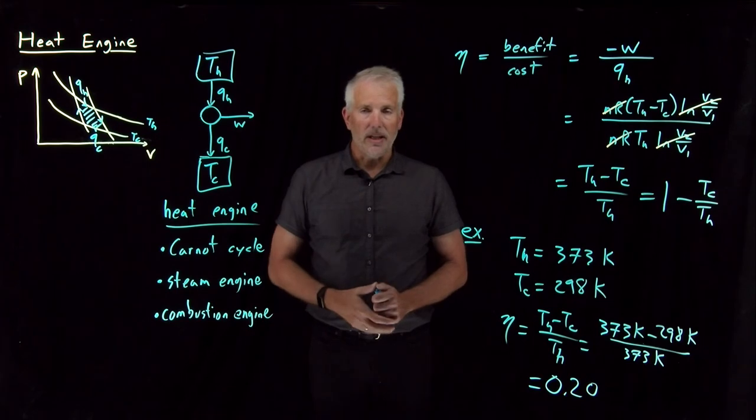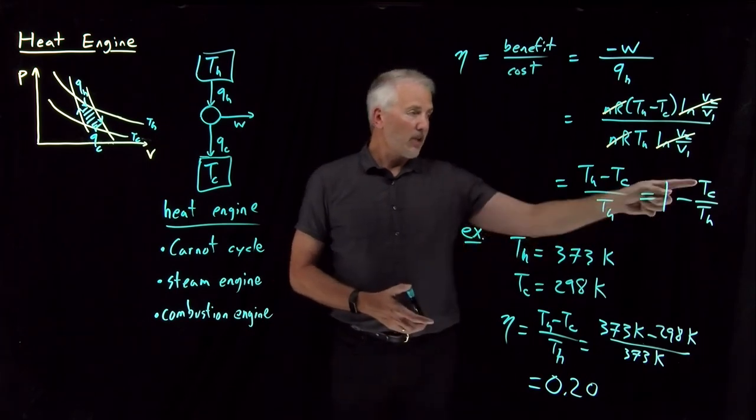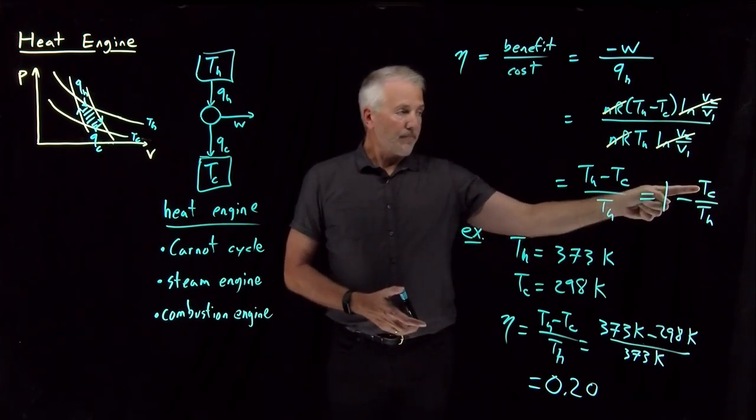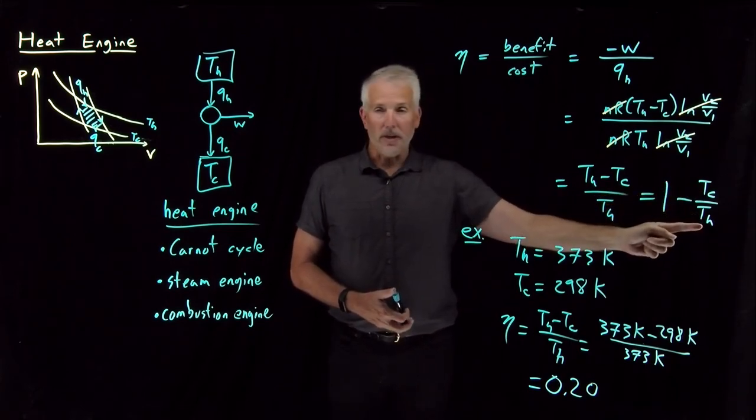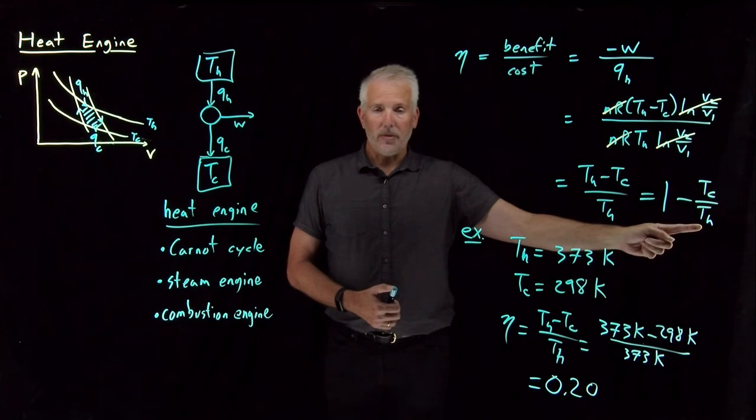So that steam engine is not terribly efficient, and that's because our room temperature, 298 Kelvin, is a pretty large fraction of the operating temperature of 373 Kelvin.